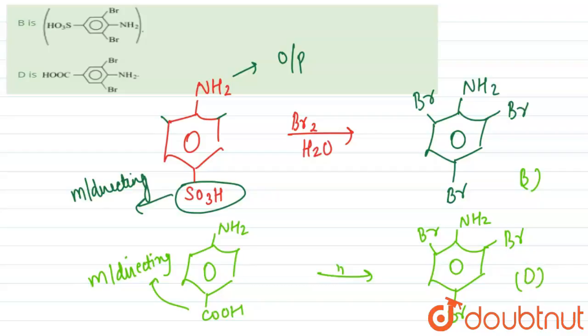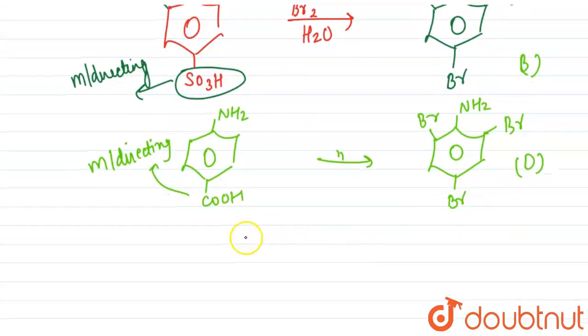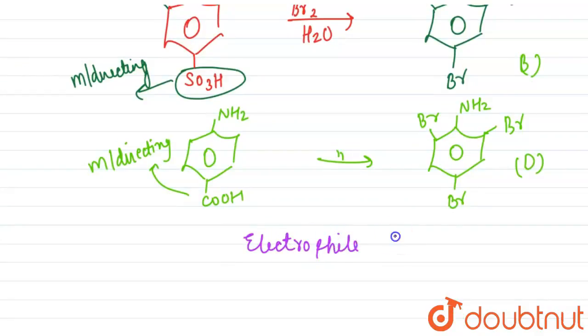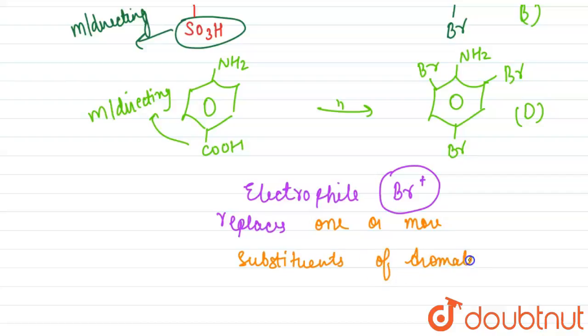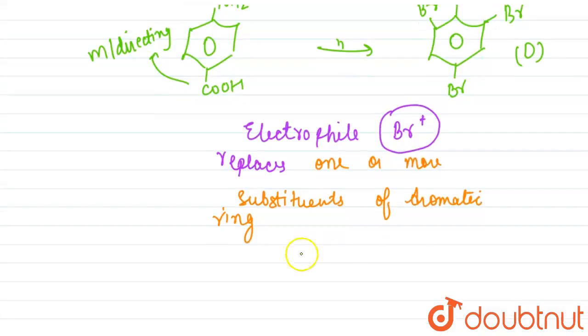In this type of reaction, an electrophile - bromine is the electrophile - Br+ is the electrophile here, and it replaces one or more substituents of the aromatic ring. That is why it is known as ipso substitution.